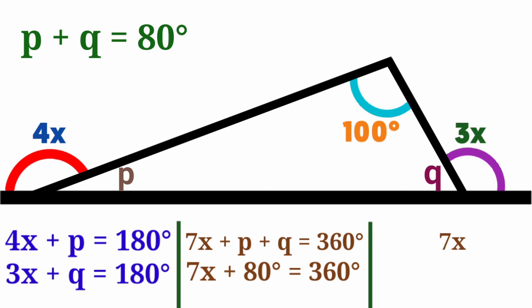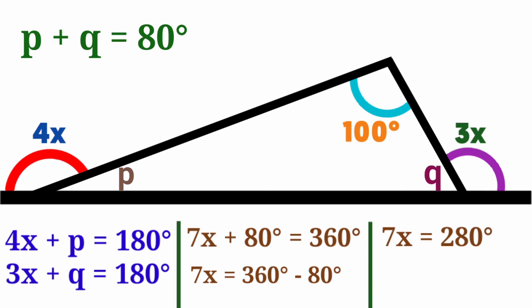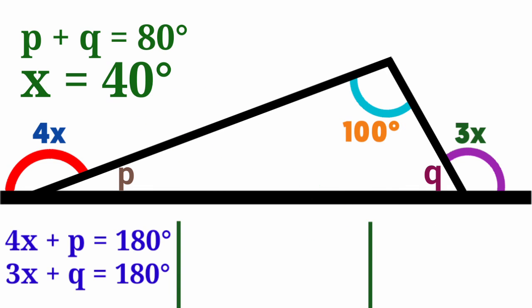So 7x equals 360 minus 80, which is 280. To find x, we divide 280 by 7, giving us x equals 40 degrees. Now we can use this value to find angle P and angle Q.